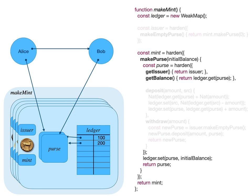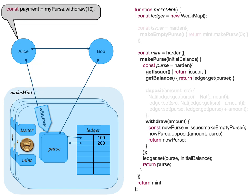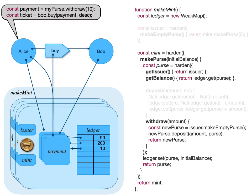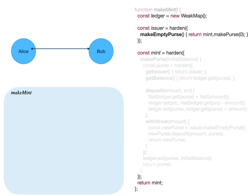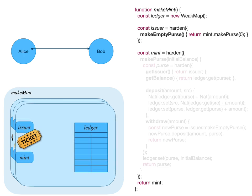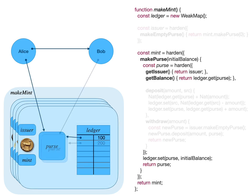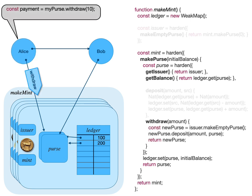Having set up the initial conditions, we examine a scenario in which Alice wants to buy from Bob a concert ticket. Alice starts by sending to her main purse a withdrawal message. The withdrawal message creates a new payment purse and changes the ledger to move the requested amount of assets from being associated with the main purse to being associated with the payment purse. The payment purse is then returned to Alice, who can then use it to send a buy message to Bob.